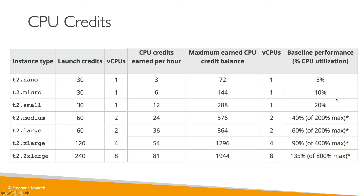Different instance types earn credits at different rates. For a T2 micro, you earn a launch credit of 30 and then six credits per hour. The maximum amount of credits you can have is 144, and the baseline performance is 10%.